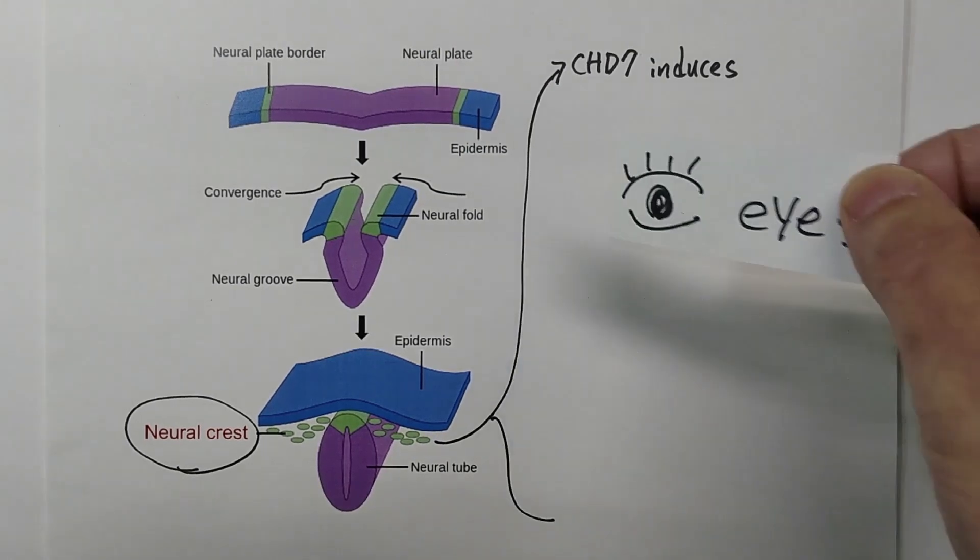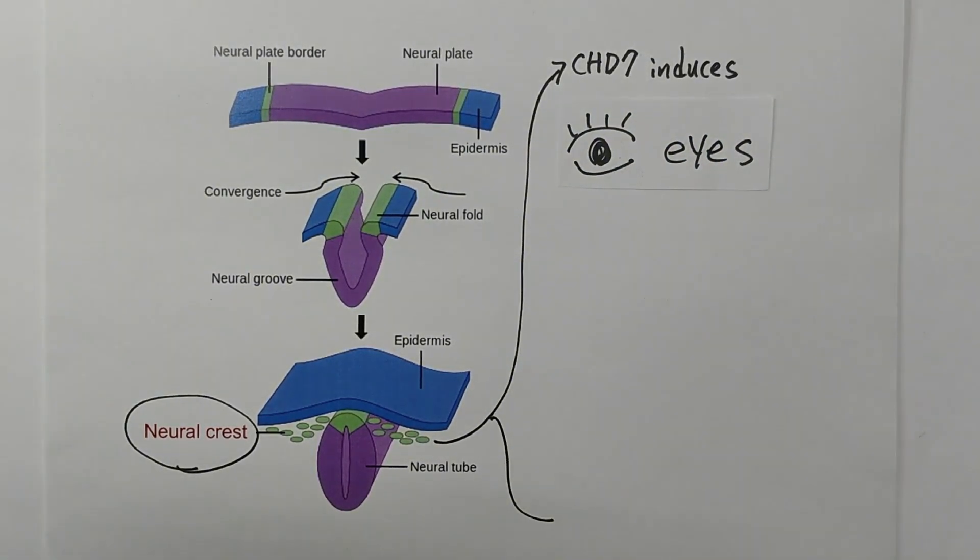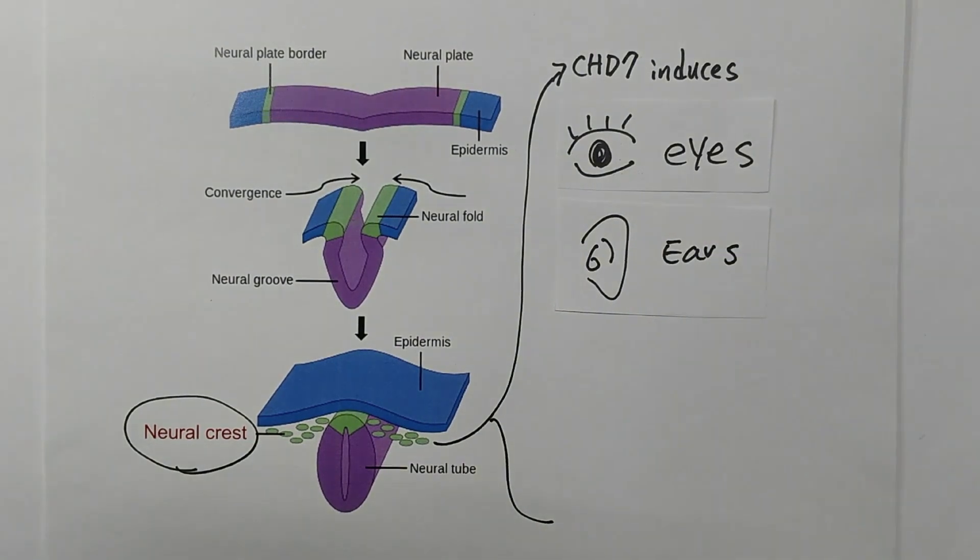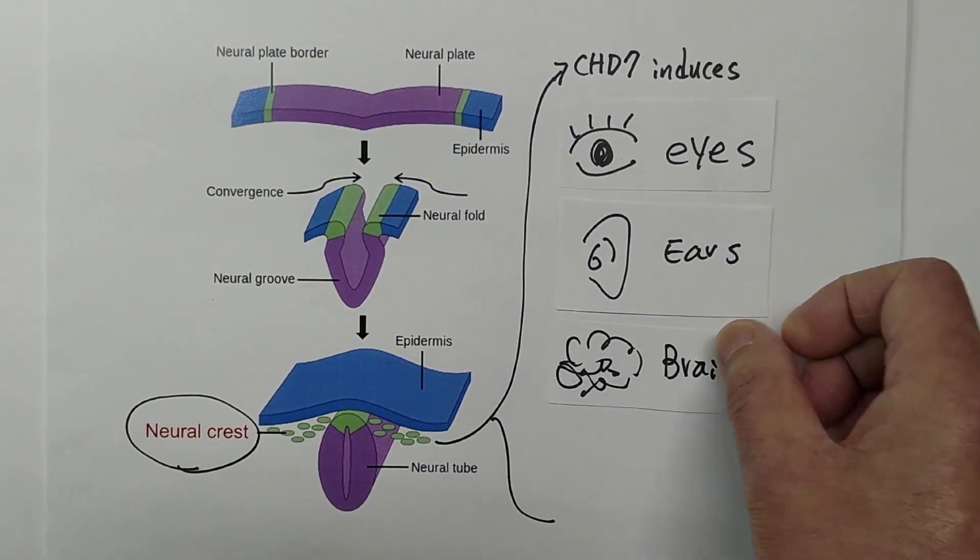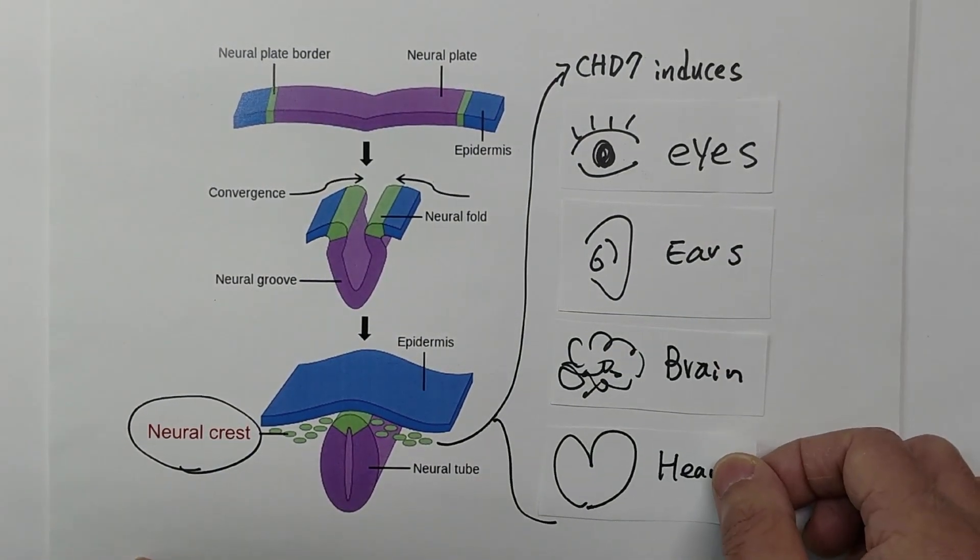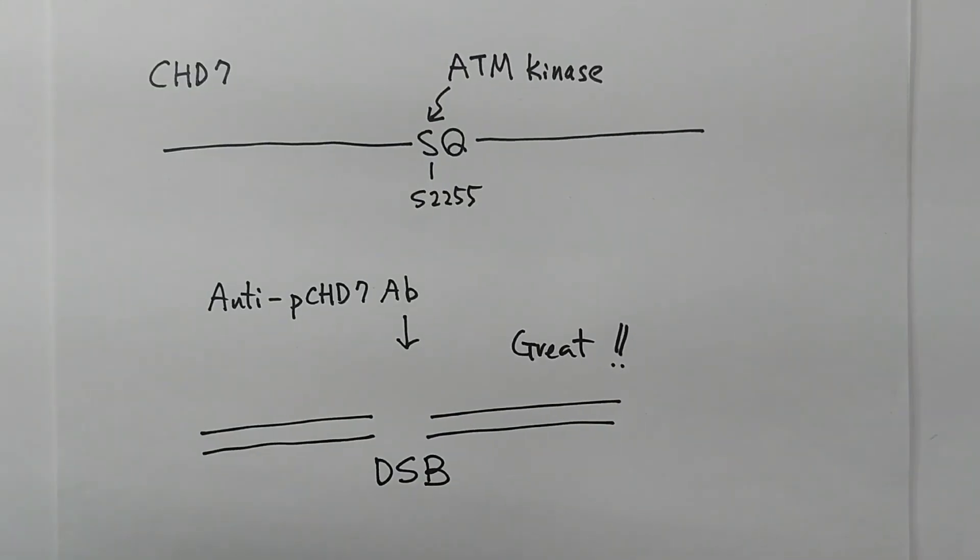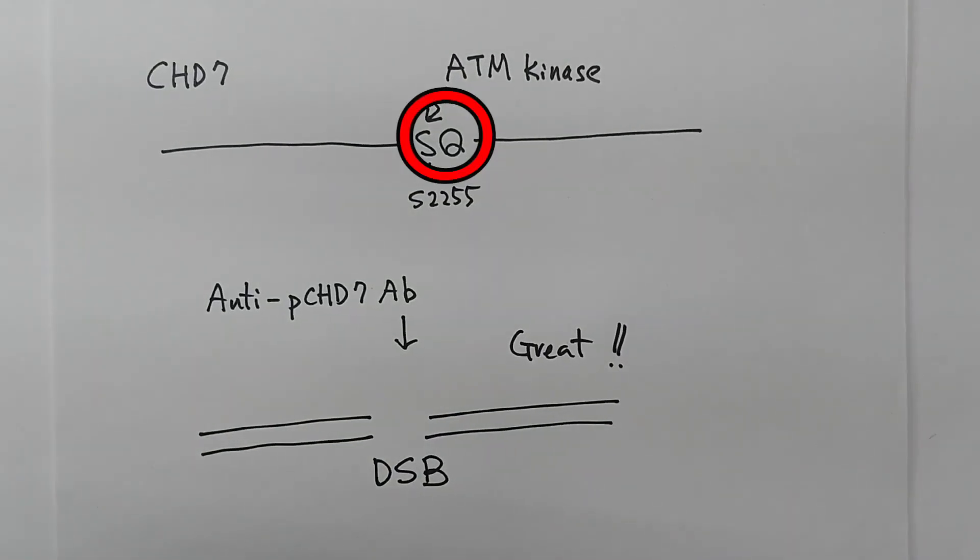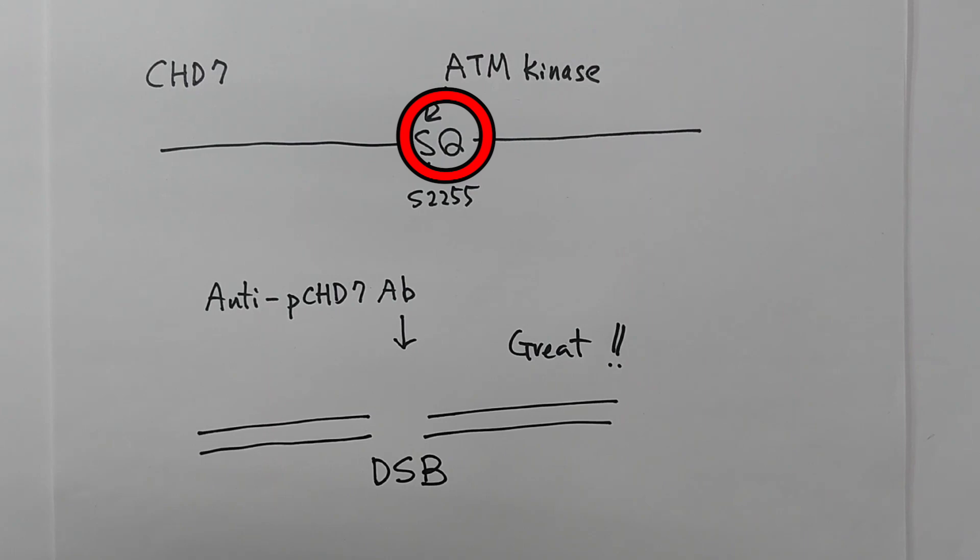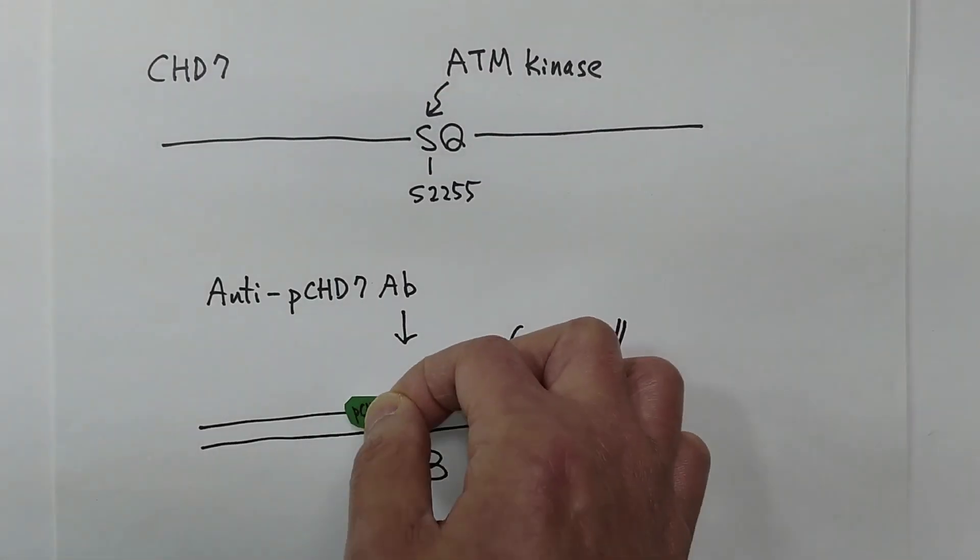CHD7 is a transcription factor that controls the morphogenesis of neural crest cells to develop neurosensory organs such as eyes, ears, brain, and heart. Since CHD7 has a serine-glutamine sequence that serves as an ATM kinase target,